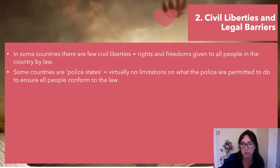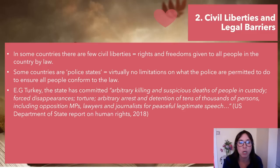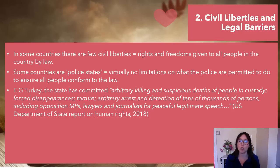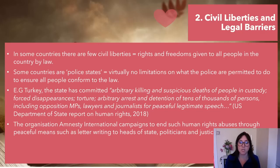For example, Turkey: the state has committed arbitrary killings and suspicious deaths of people in custody, forced disappearances, torture, and arbitrary arrest and detention of tens of thousands of persons, including opposition MPs, lawyers, and journalists for peaceful, legitimate speech. This was a US Department of State report on human rights in 2018. Basically, they can arrest anybody they want — anybody they don't like, anybody that causes them problems — and these people disappear. The organisation Amnesty International campaigns to end human rights abuses through peaceful means such as letter writing to heads of state, politicians, and justice departments.